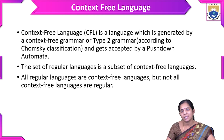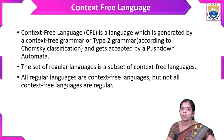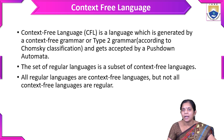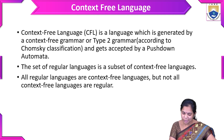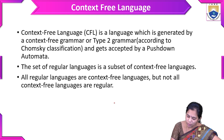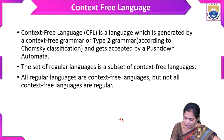According to the Chomsky classification, context-free grammars and context-free languages belong to type 2 and are accepted by the Pushdown Automata. Here we will discuss the Chomsky Hierarchy. There are four types: type 3 is regular grammar, regular language.